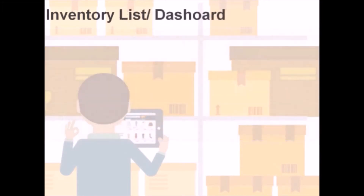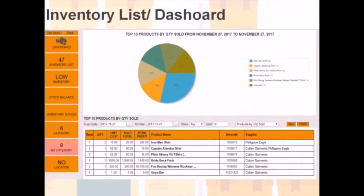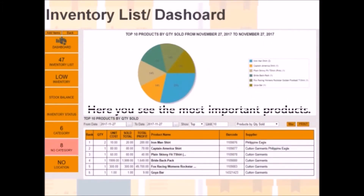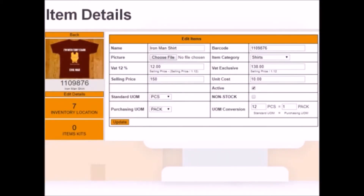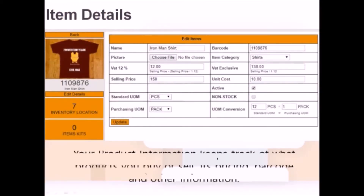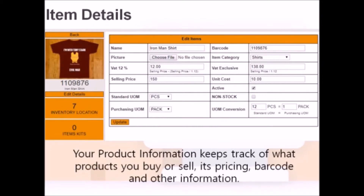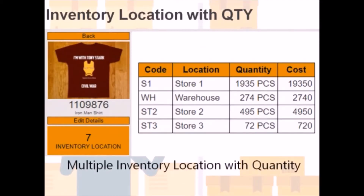Here is a quick look at the inventory dashboard. Here we can see the best selling products at a given time. As we add new items, the product information keeps track of purchases and sales, its pricing, barcode, and other details. The inventory location is a quick shortcut to knowing the quantity per location.